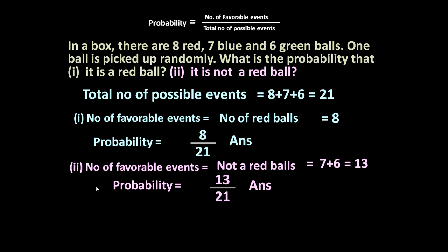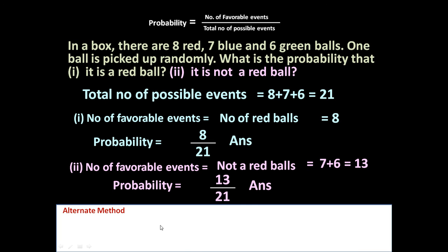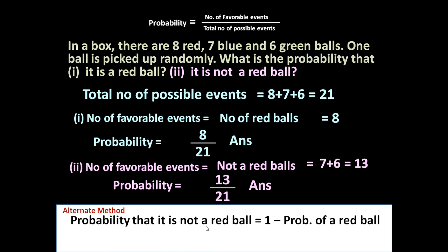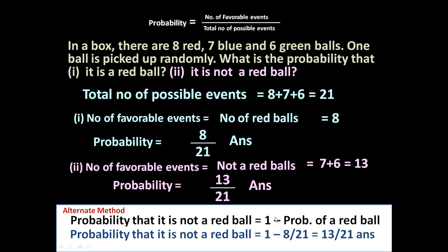There is one more method to solve Part 2 — the alternative method. Probability that it is not a red ball = 1 minus probability that it is a red ball. Because probability of being red plus probability of not being red must equal 1: when we pick up a ball, the total probability must be 1. So probability not red = 1 minus 8 upon 21 = 13 upon 21. Using either method we get the same answer.